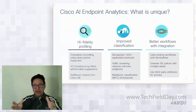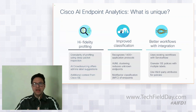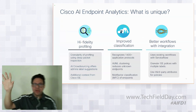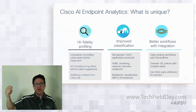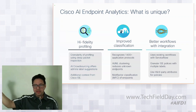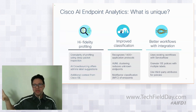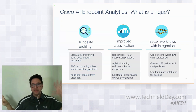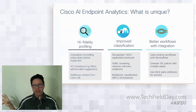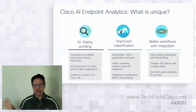As endpoint attributes are aggregated, things that are profiled stay local, and things that are not profiled are sent over to the ML cloud. In the ML cloud, it intuitively groups or clusters endpoints based on a common set of attributes — what we call AIM clustering. This helps reduce the number of unknowns in your environment. Once clusters are created, admins can label them. A label created by one customer can be shared with other customers through crowdsourcing — that feature is still under development.